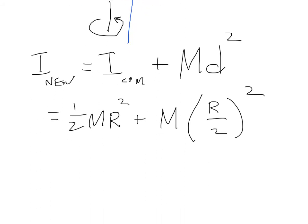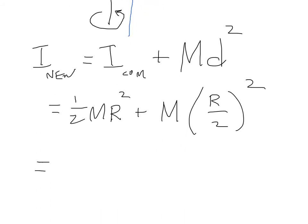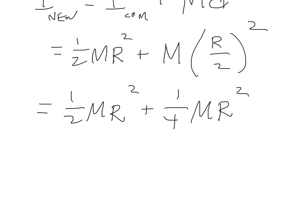And then I'll give myself a little more space here. I'm just going to simplify. This is one half M R squared plus, and because the two in the denominator gets squared, it's one fourth M R squared in the second term, for a nice, pretty simple three fourths M R squared. So that's our new moment of inertia through that blue axis that I had drawn.